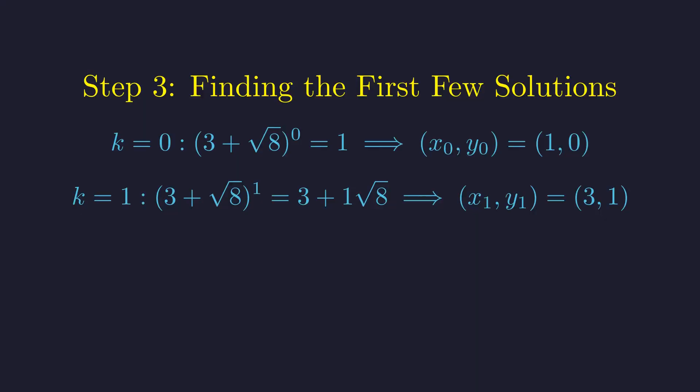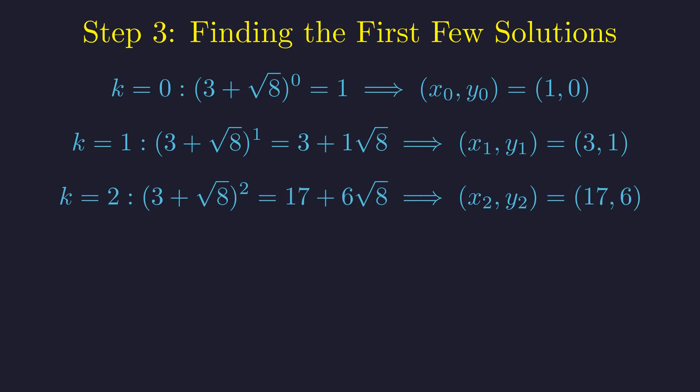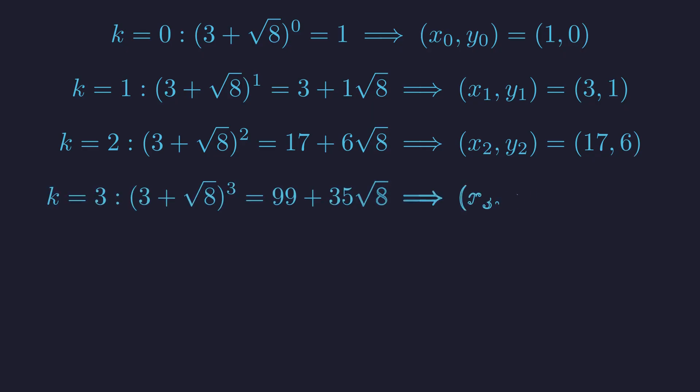For k equals 1, we recover the fundamental solution, 3, 1. For k equals 2, we expand the square to get 17 plus 6 times the square root of 8. This gives the solution 17, 6. For k equals 3, we find the solution 99, 35. This process continues indefinitely.